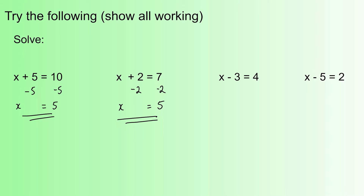Now moving on to something a little bit different — we've got x minus 3 this time, so the signs change. We always want just the x on its own; the opposite of minus 3 is plus 3, because minus 3 plus 3 gives us zero. So we're going to add 3 to both sides: four add three is seven, so x equals 7. And finally, x minus 5 equals 2 — we're going to add 5 to both sides, and that gives us x equals 7.